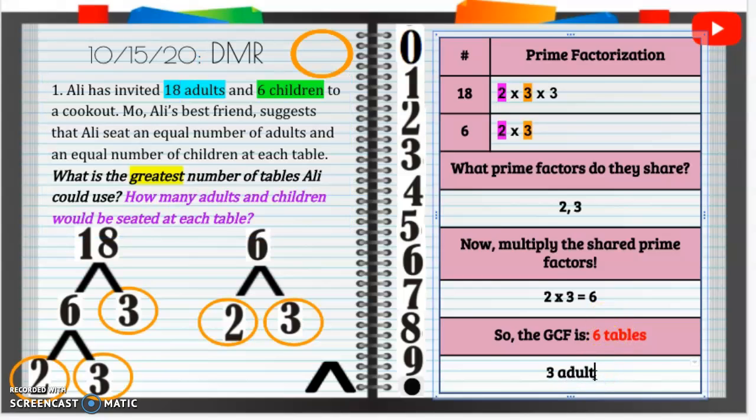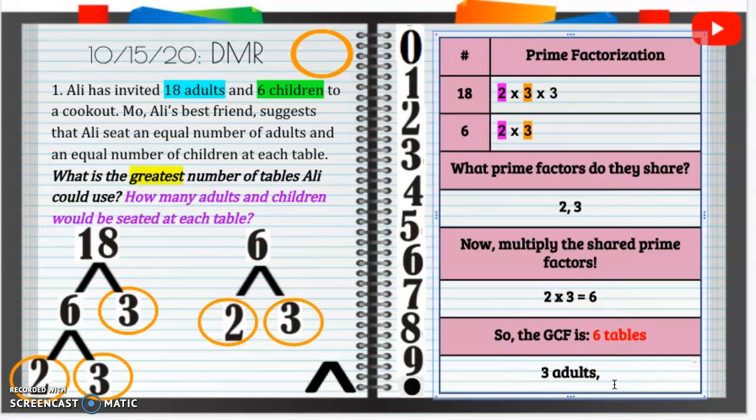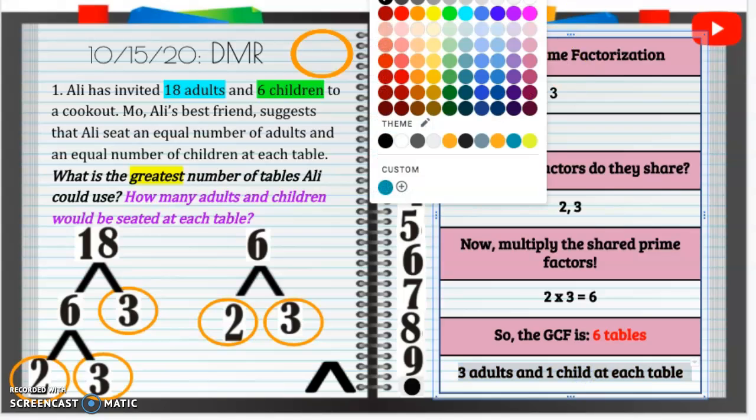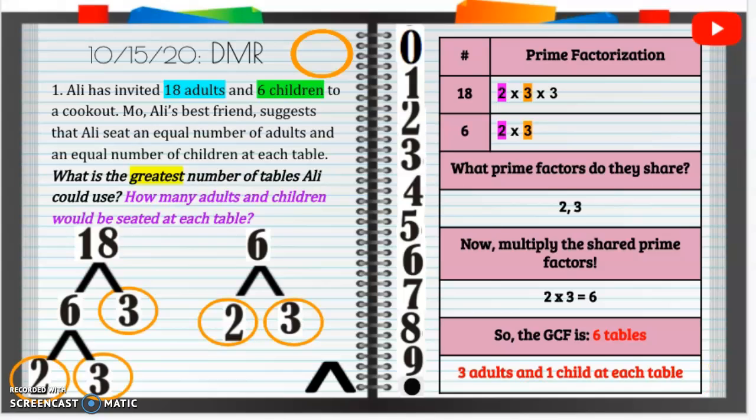And then let's see, this 6, we're going to divide 6 by this greatest common factor. So 6 divided by 6 is 1. So 3 adults and 1 child at each table. At each table. So 3 adults and 1 child at each table. I'm going to put that in red as well, because that is also part of our answer. And that is it for our DMR. Great job.